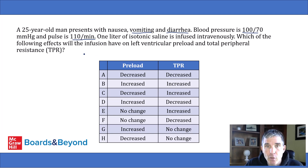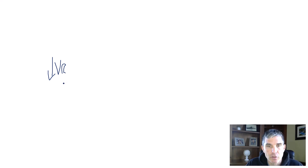The second step is to know what happens when the body becomes volume depleted for any reason. This could be through any mechanism — vomiting and diarrhea like in the question stem, hemorrhage, or sweating on a hot day. For any reason, if a person becomes volume depleted, that will decrease the venous return to the right ventricle. Basically, there's less total blood volume, so less venous return to the heart.